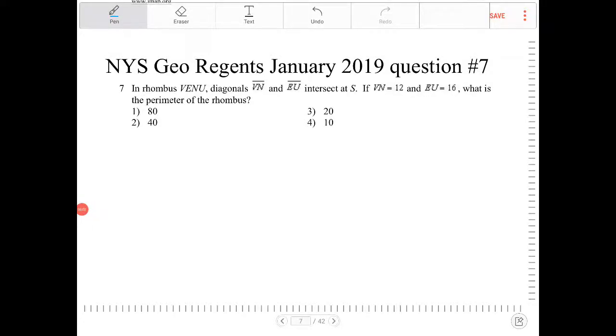In rhombus VENU, diagonals VN and EU intersect at S. If VN is equal to 12 and EU is equal to 16, what is the perimeter of the rhombus?